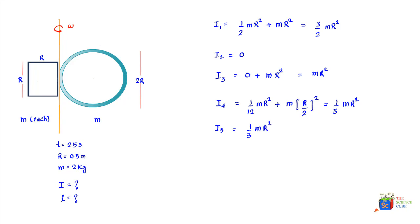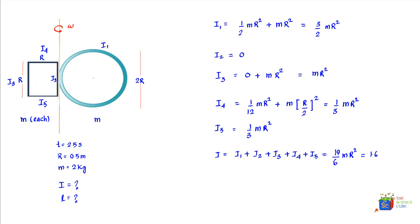Labeling the components: I₁ is the hoop, I₂ is the axial bar, I₃ is the horizontal bar, and I₄ and I₅ are the two vertical bars. Summing all moments of inertia: I = I₁ + I₂ + I₃ + I₄ + I₅ = (19/6)mr². Substituting m = 2 kg and r = 0.5 m gives I = 1.6 kg·m².